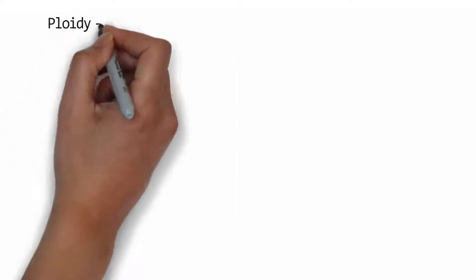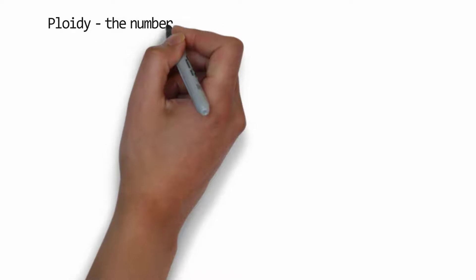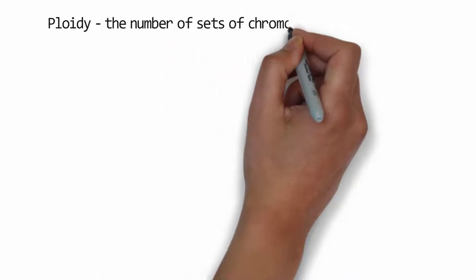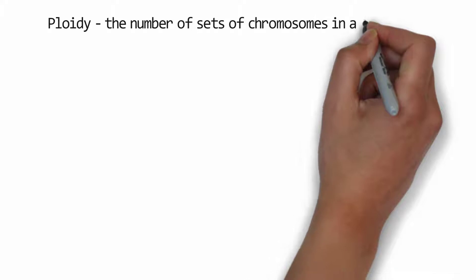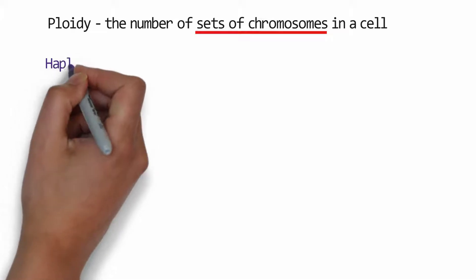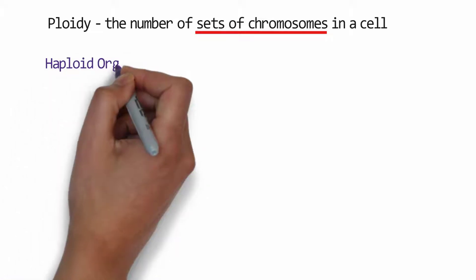So whenever we discuss ploidy of a cell, ploidy means the number of sets of chromosomes in a cell. Now on the basis of ploidy, we can differentiate the cells into haploid cells and diploid cells.